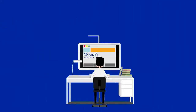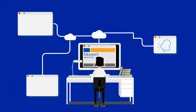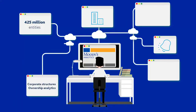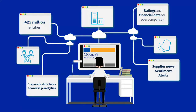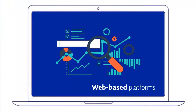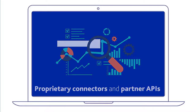Moody's Analytics can help you manage and mitigate these supplier risks by providing a database of over 425 million entities worldwide, detailed corporate structures and sophisticated ownership analytics, ratings and financial data for peer comparison analysis, and near real-time supplier news, sentiment, and alerts. You can access these resources directly through our web-based platforms, or connect to them through your existing platforms via our proprietary connectors and partner APIs.